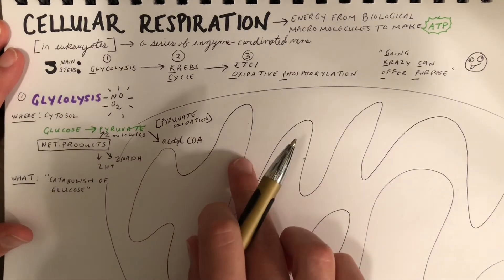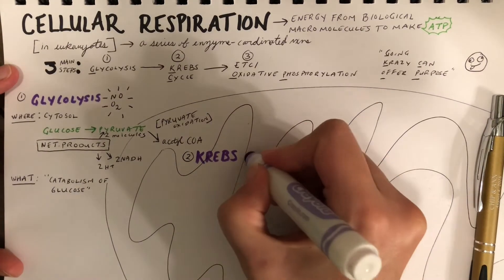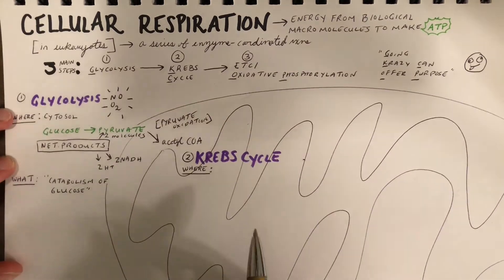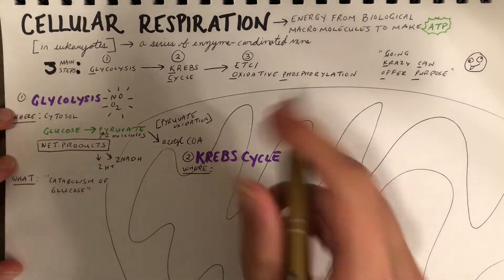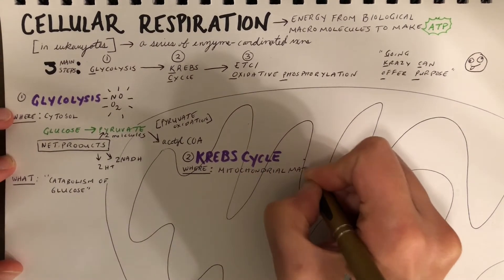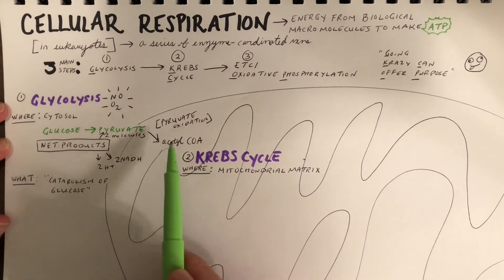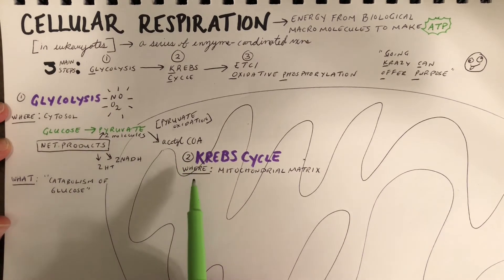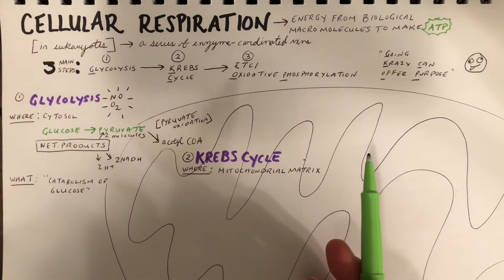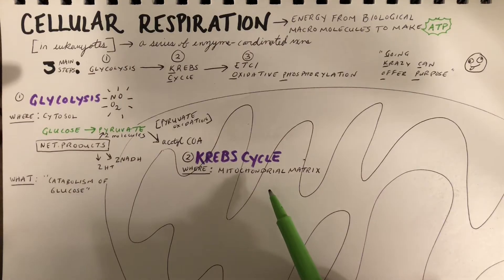Our next main step is going to be the Krebs cycle. This takes place in the inner mitochondrial matrix. An important thing to remember is that our pyruvate that is broken down during the last steps of glycolysis is now broken down here into carbon dioxide and water. We talk about the net reaction of cellular respiration and getting carbon dioxide as a byproduct. This part of the process is where that carbon dioxide comes from.